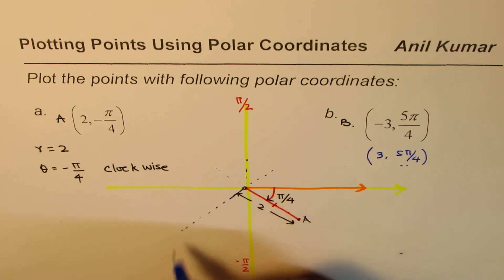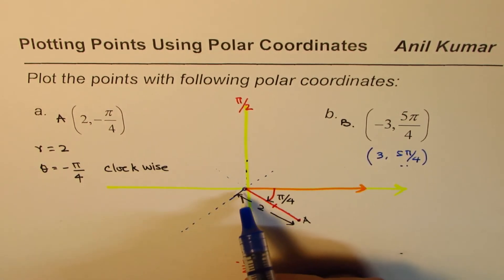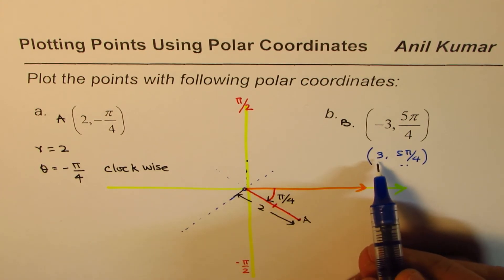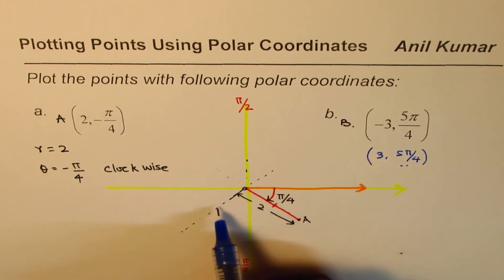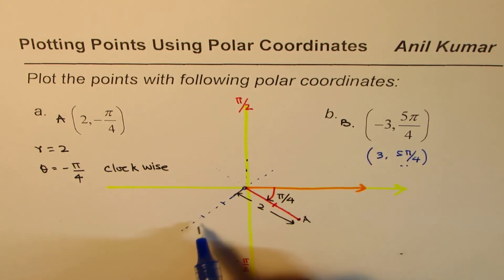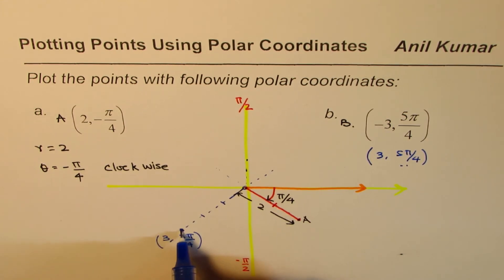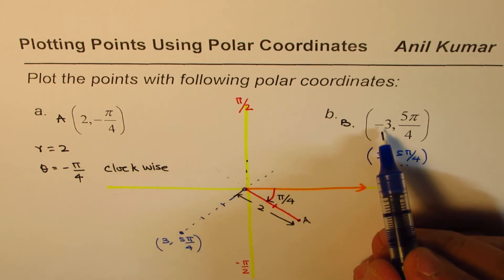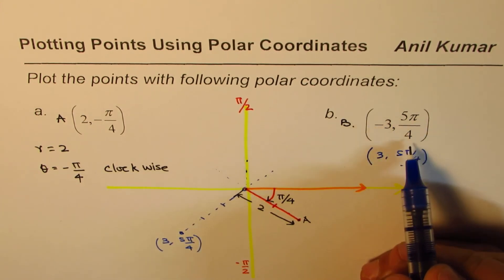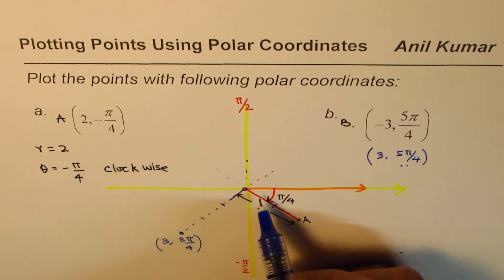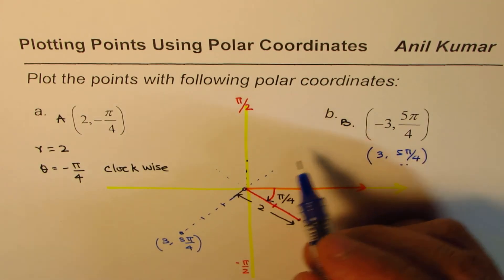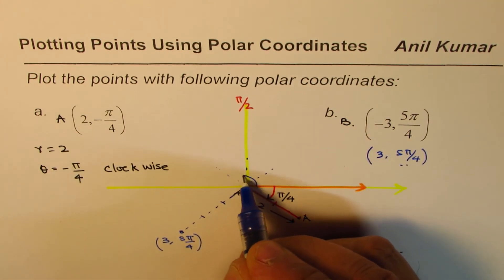5π/4 means this is π/4, 2π/4, 3π/4, 4π/4, and 5π/4 is this direction. Now on this we are looking for a magnitude of 3. So that much is 1 unit, 2 units, 3 units is around that much. So this point is basically (3, 5π/4). So that is the coordinate point (3, 5π/4).